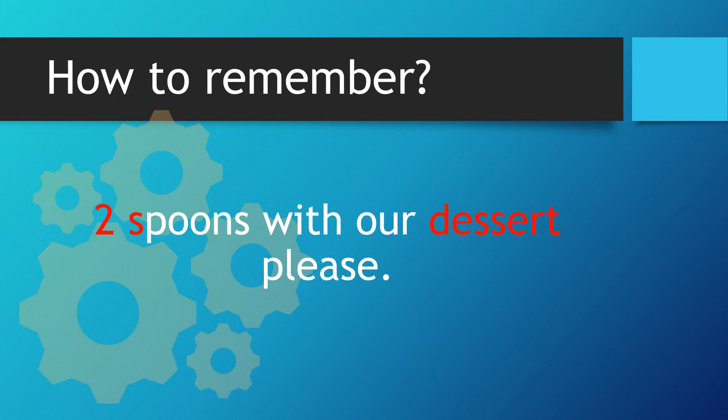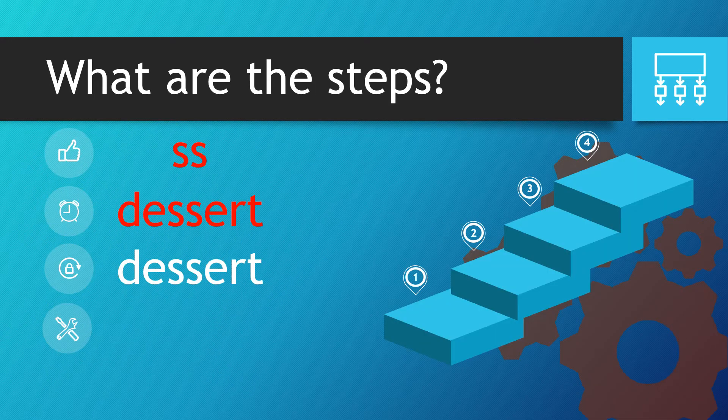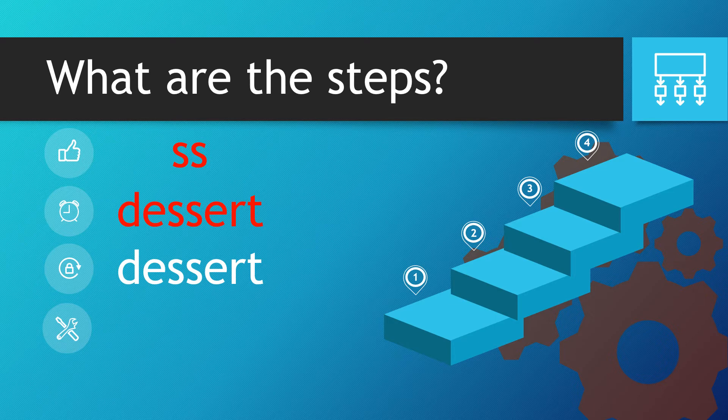So how can we remember this word and not make mistakes? Well, two spoons with our dessert please. You just remember double s because you need two spoons for your dessert. You're going to share it. So you take the two s's, put that into the middle of the word dessert.